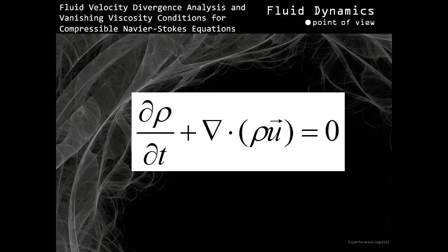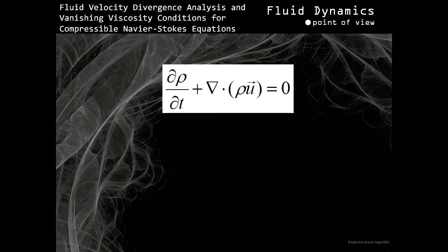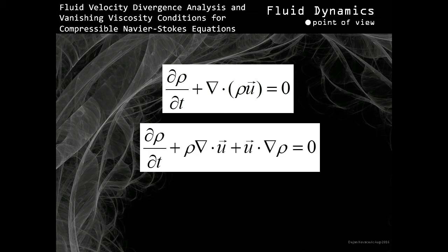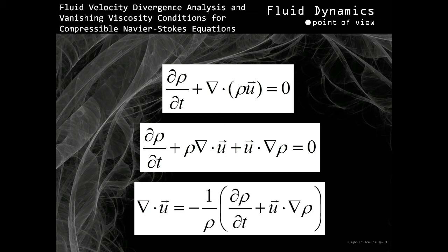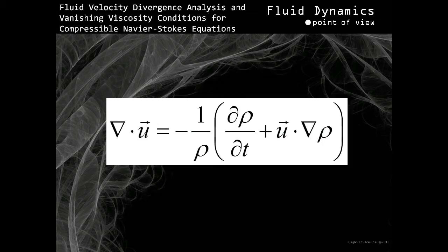Let's look into the continuity equation a bit closer. Let's expand terms within the brackets by application of the divergence operator. Now let's rearrange the terms of the equation so that divergence of the velocity vector field is on one side of the equation and the rest of the terms are on the other side. The resulting statement expresses fluid velocity vector field divergence in function of fluid density as well as fluid velocity itself.